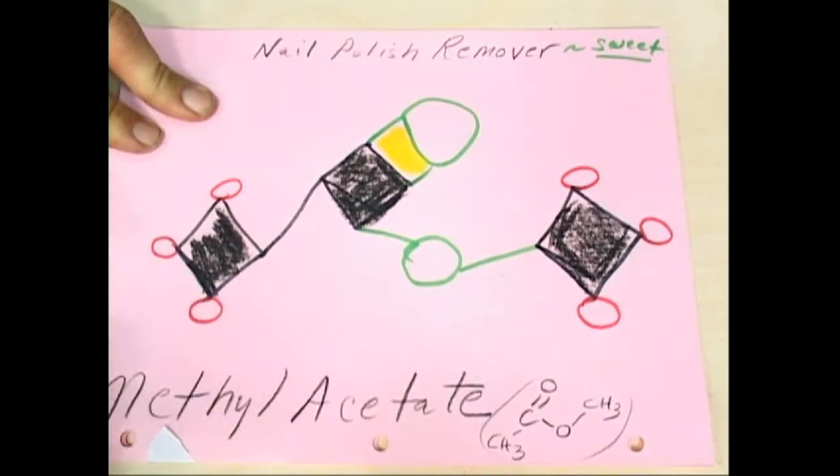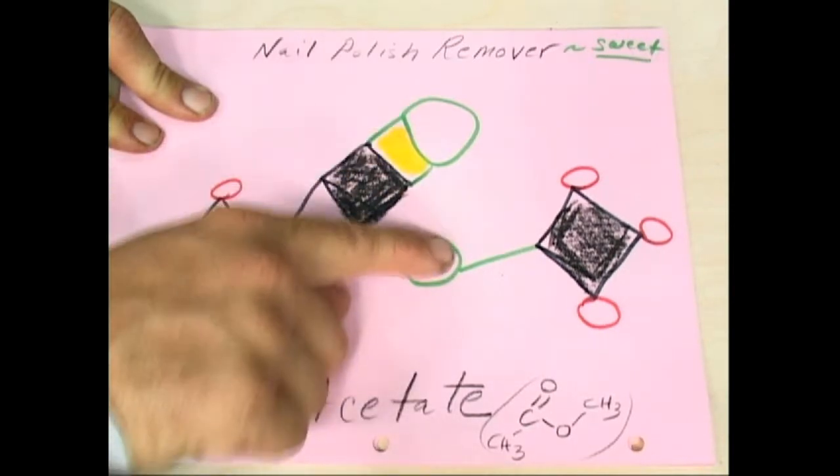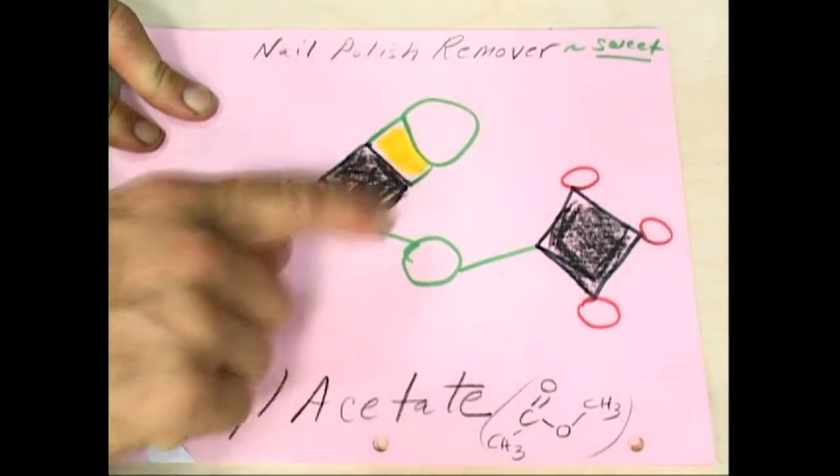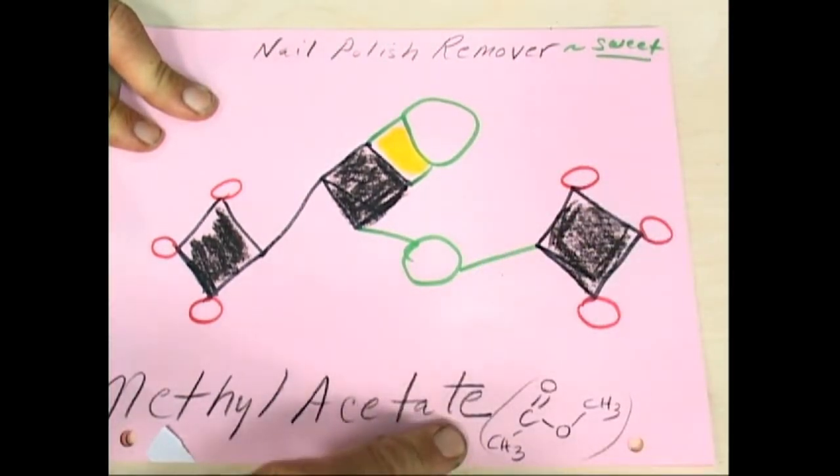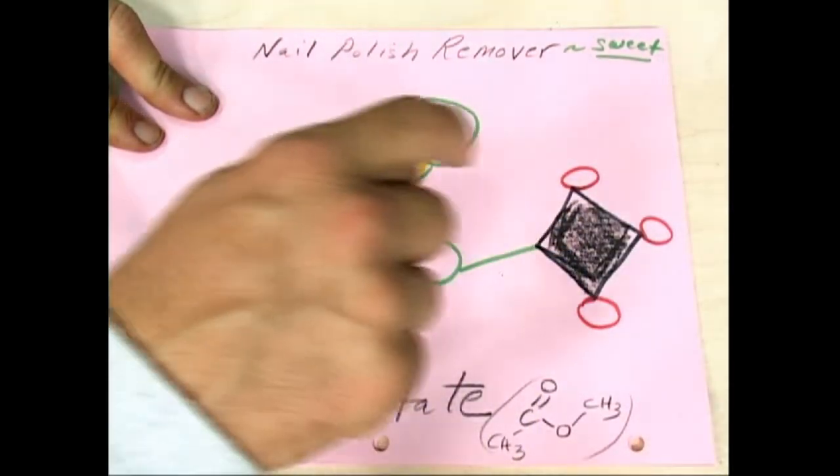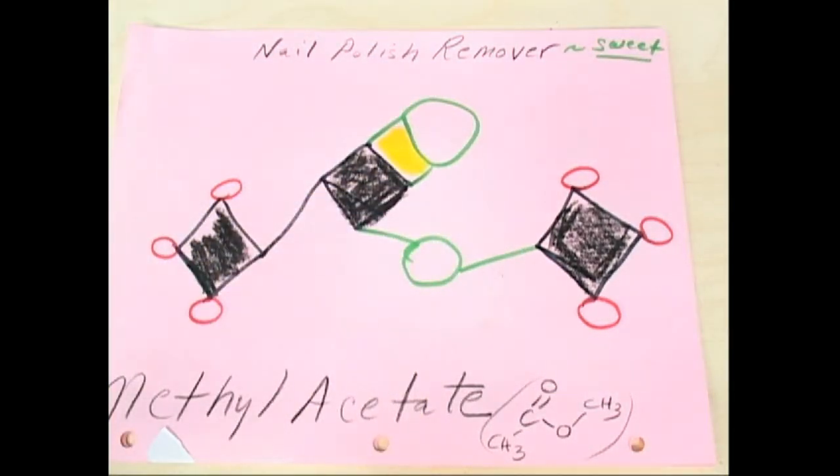So on this side, this is the methyl. The other side is the acetate because of the ester when it's bonded, but that would have been the carboxylate, so it's called acetate. Methyl acetate.